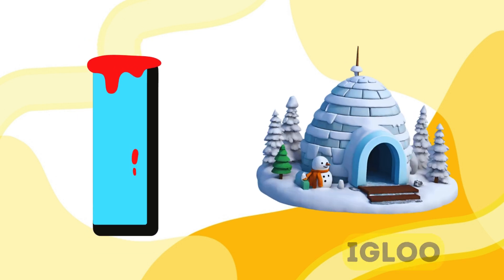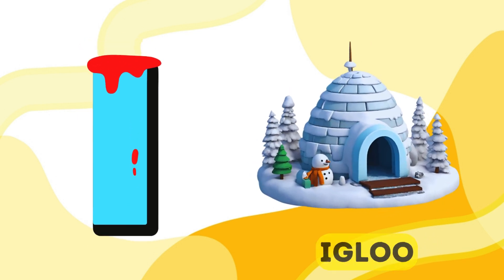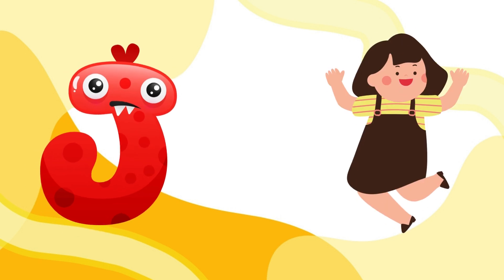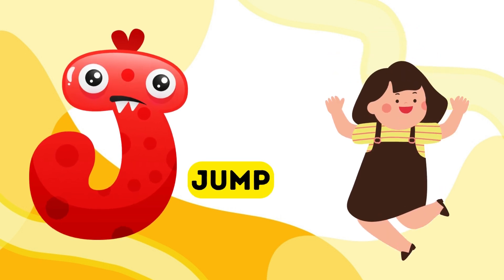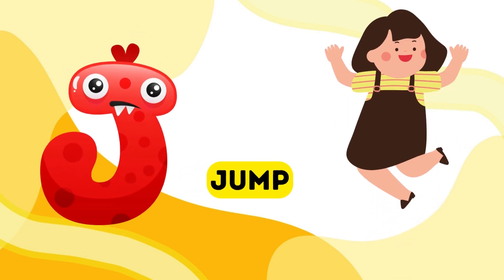I is for igloo, i-i-igloo. J is for jump, j-j-jump.